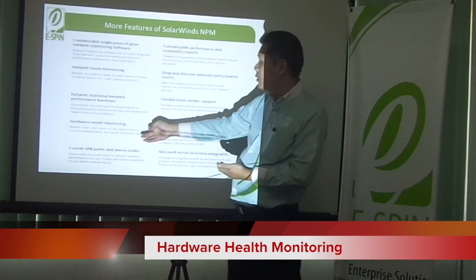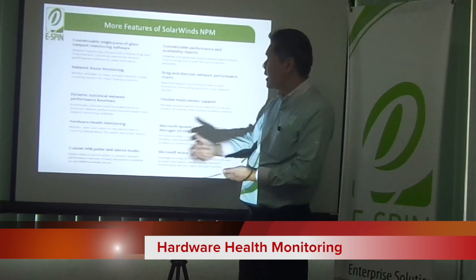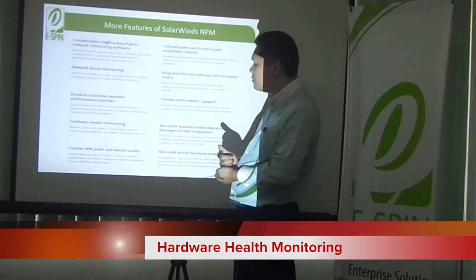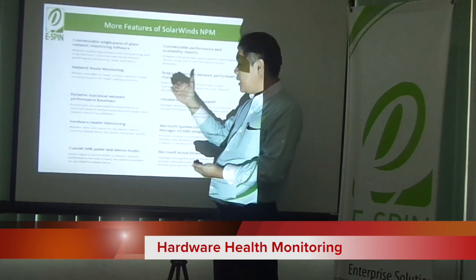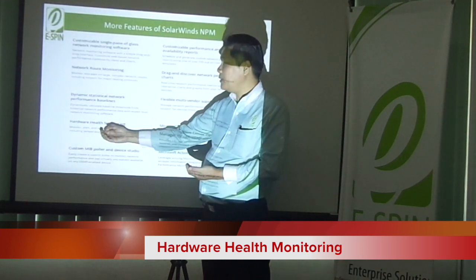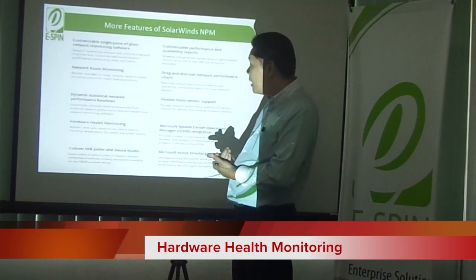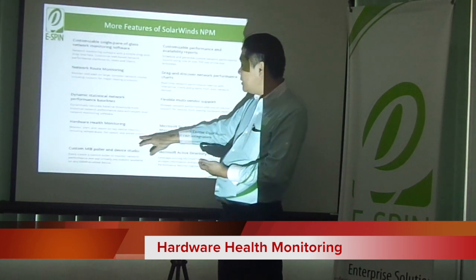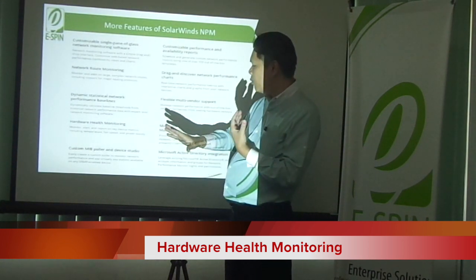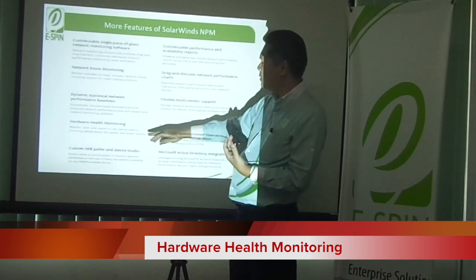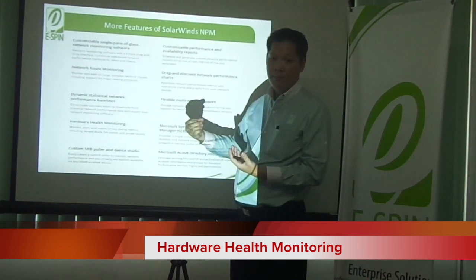Hardware health monitoring lets you monitor and report on key hardware metrics including temperatures, fan speeds, and power supplies. For certain devices that are sensitive to temperature, if you know the temperature has increased by a few degrees Celsius you can trigger an alert to have someone investigate — this is particularly important for data center deployments. If a fan slows down or if you have dual redundant power supplies and one fails, you don't need to wait for the device to go down. The system can trigger a ticket for the vendor to repair the power supply proactively — we call it preventive monitoring.